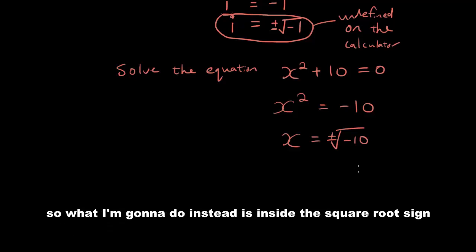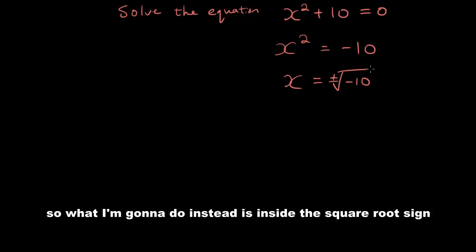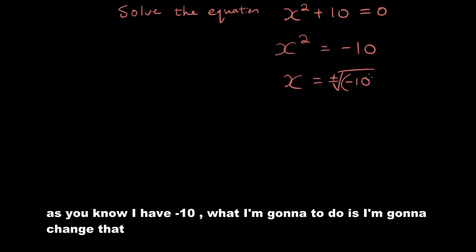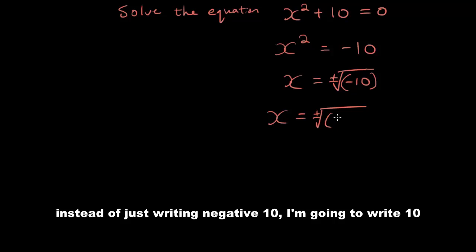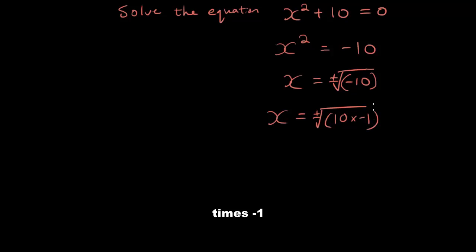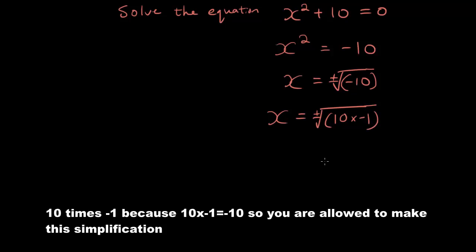So what I'm going to do instead is inside the square root sign, as you know, I have negative 10. What I'm going to do is I'm going to change that section. So I have square root plus minus square root bracket. Instead of just writing negative 10, I'm going to write 10 times negative 1, because 10 times negative 1 is negative 10. So you are allowed to make this simplification.